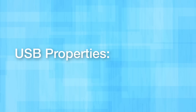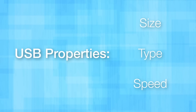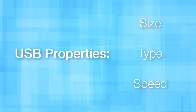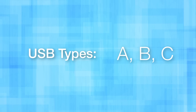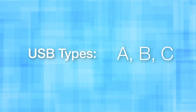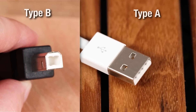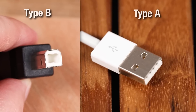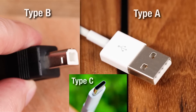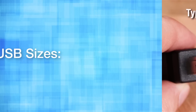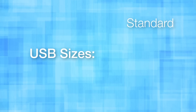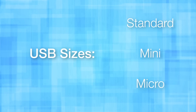As a little bit of background, USB connectors are going to be mostly categorized in three different ways: by size, type, and speed. I'm mostly going to focus on size and type today. For type there are three — A, B, and C — and for the longest time A and B were the only two. For size, there are three possible sizes: standard, mini, or micro.